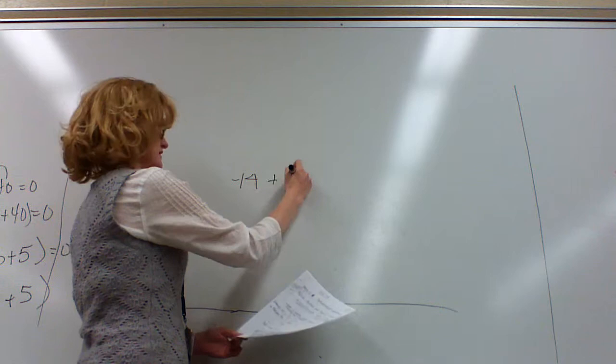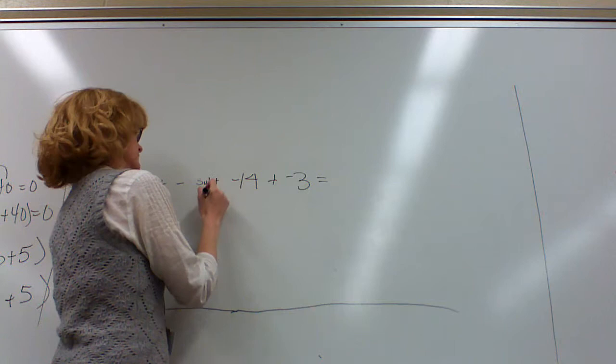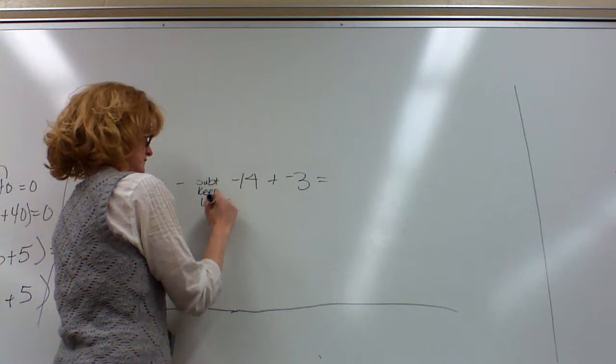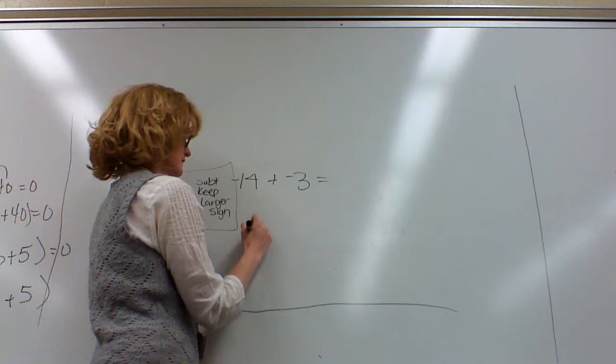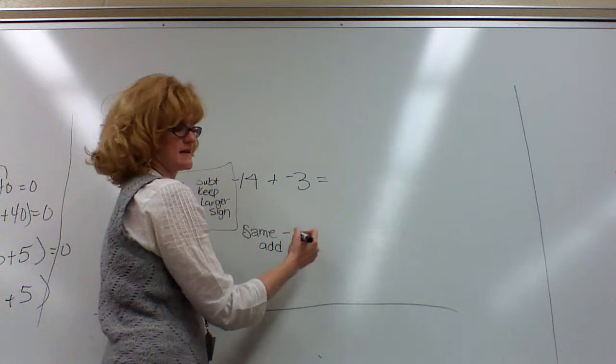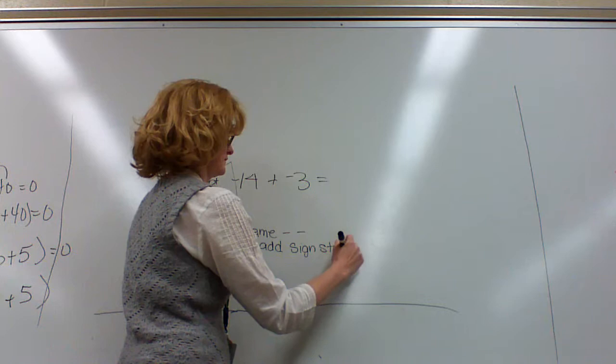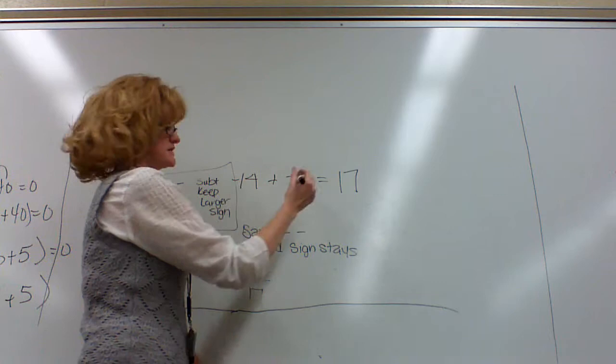Negative 14 plus negative 3. This one's different. The other two were positive and negative, and then you subtract and then keep the larger sign. That was the first one. This one's a little different. These are the same. They're both negative. When they're both negative, you add the numbers, and the sign stays the same as both of them. So 14 plus 3 is 17. The answer is 17, and then the sign of both of them is negative, so it stays the same.